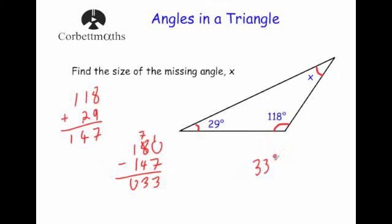And you can check it — if you add all three angles, you will get 180. And that's how you find the missing angle in that triangle.